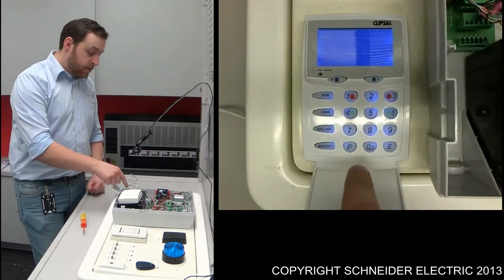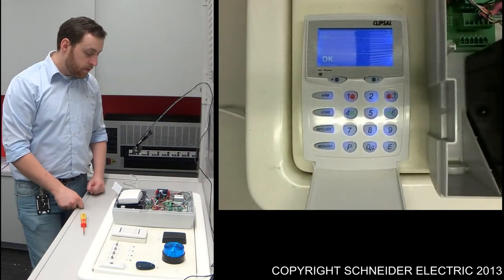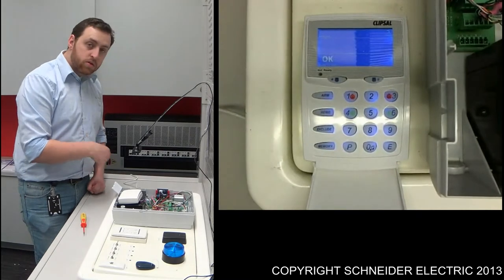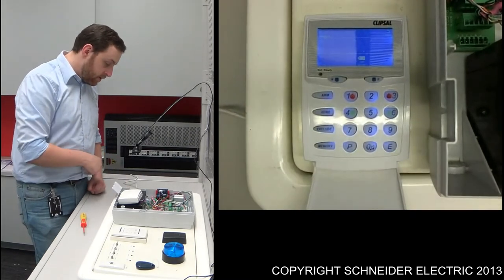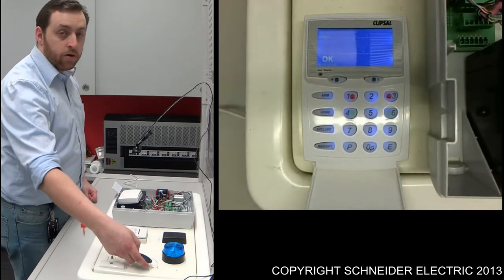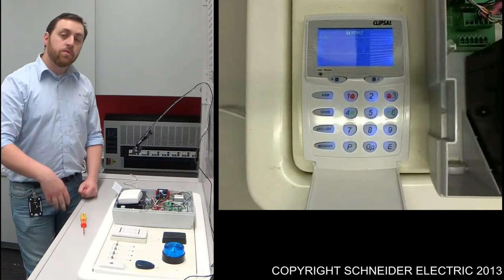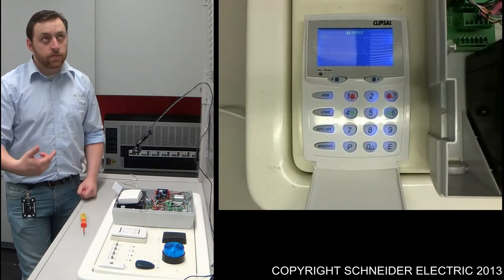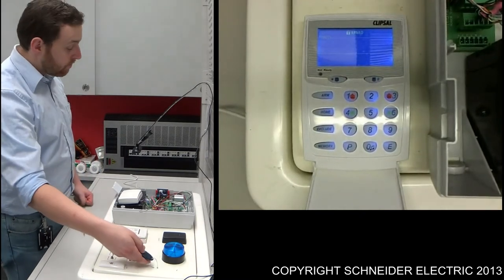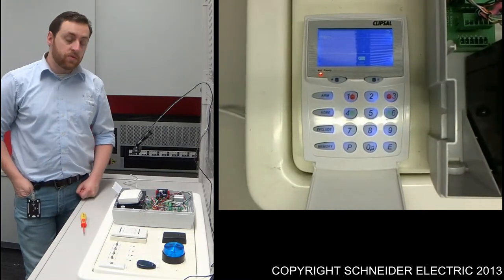To test it, simply just go PE to exit program mode. I've got memory flashing, so I'll clear that memory by pressing memory E, then E again. I'll quickly press on to arm the system. System's now armed. The entry exit delay time will now be initiating. To disarm the system, just press the off. And the security system's now disarmed.